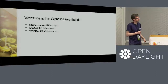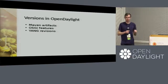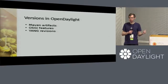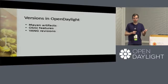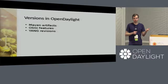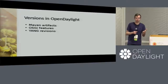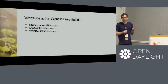This leads into the discussion points. Versions in Open Daylight are complicated because we have many different version numbers for different things: Maven artifacts of different natures — utility class JARs, Karaf bundles, OSGi bundles, artifact POMs. We're likely to see more of those in Boron. We also have OSGi bundles, OSGi features, Karaf features, and Yang revisions.